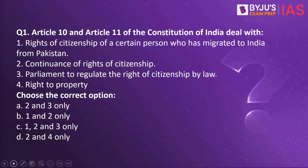Now let us begin and take a look at the first question for today. Article 10 and Article 11 of the Constitution of India deal with: No. 1 - Rights of Citizenship of a person who has migrated to India from Pakistan; No. 2 - Continuance of Rights of Citizenship; No. 3 - Parliament to regulate the right of citizenship by law; No. 4 - Right to Property. Choose the correct option.